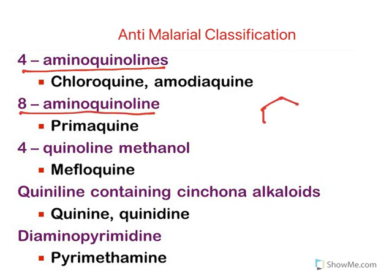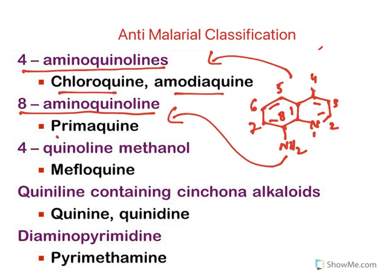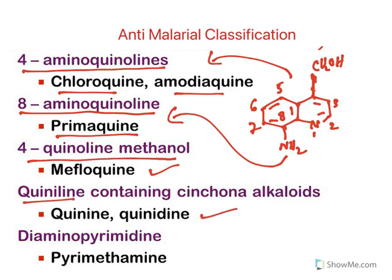Moving to classification: 4-aminoquinolines and 8-aminoquinolines are both quinoline derivatives. In quinoline, positions are numbered 1 through 8. Compounds with an amine at the 4th position are 4-aminoquinolines — examples include chloroquine and amodiaquine. Compounds with the amine at the 8th position are 8-aminoquinolines — examples are primaquine and pamaquine. 4-quinoline methanol derivatives have a methanol group at that position — example is mefloquine.